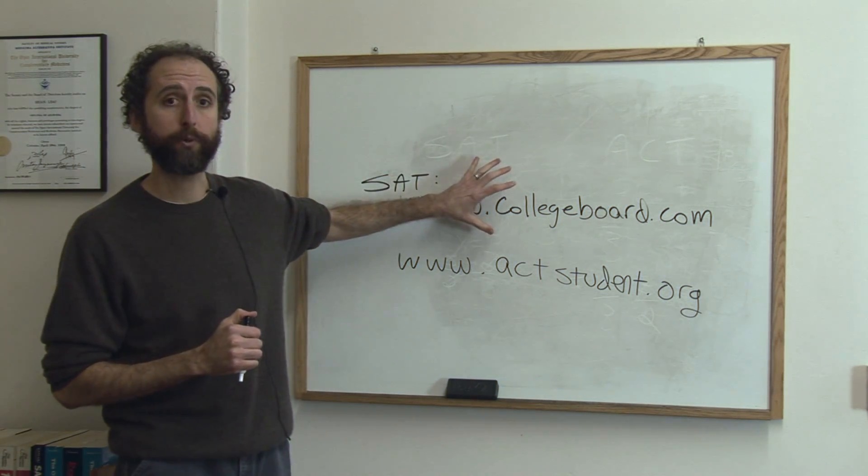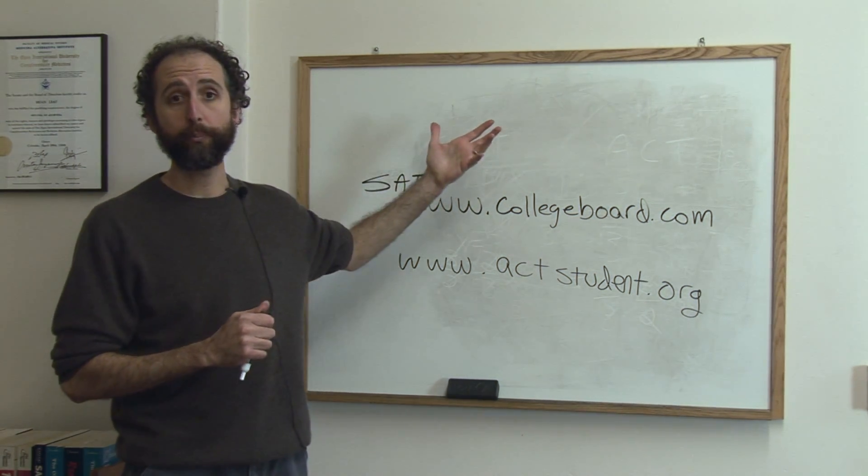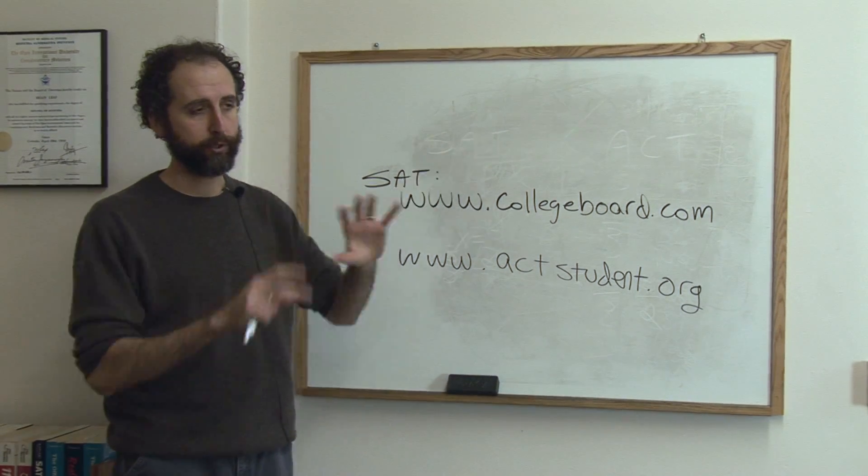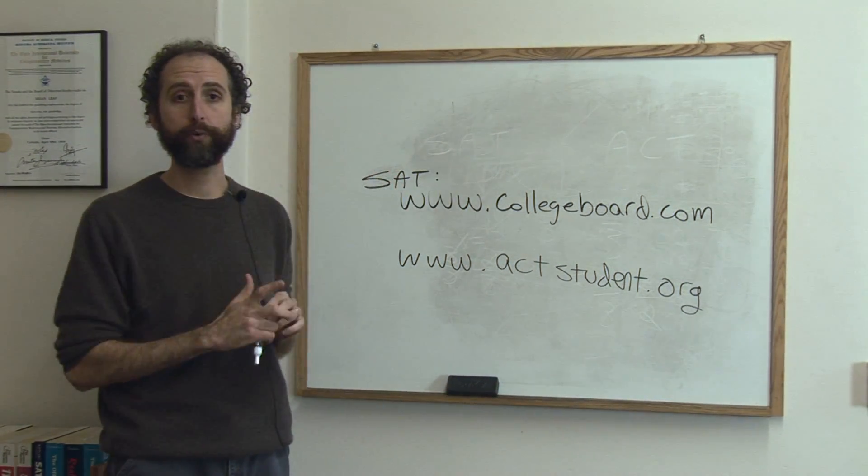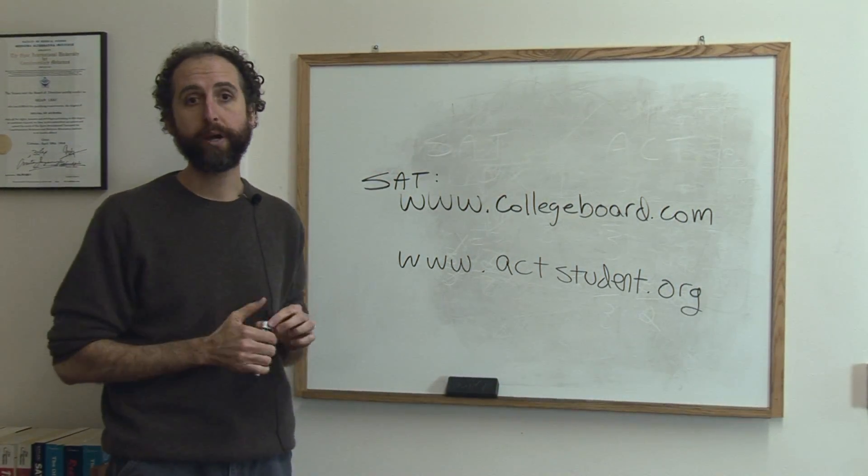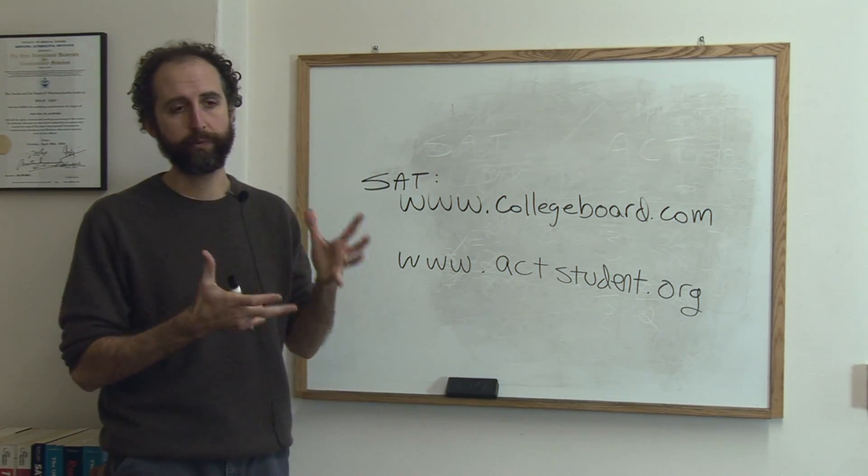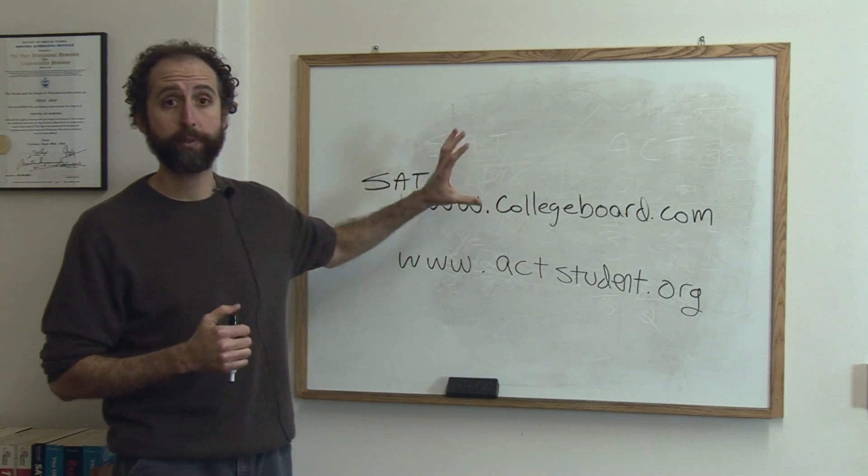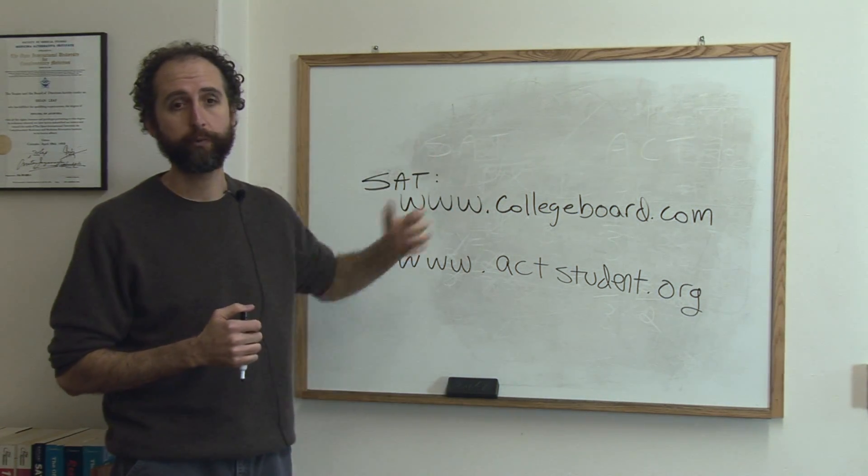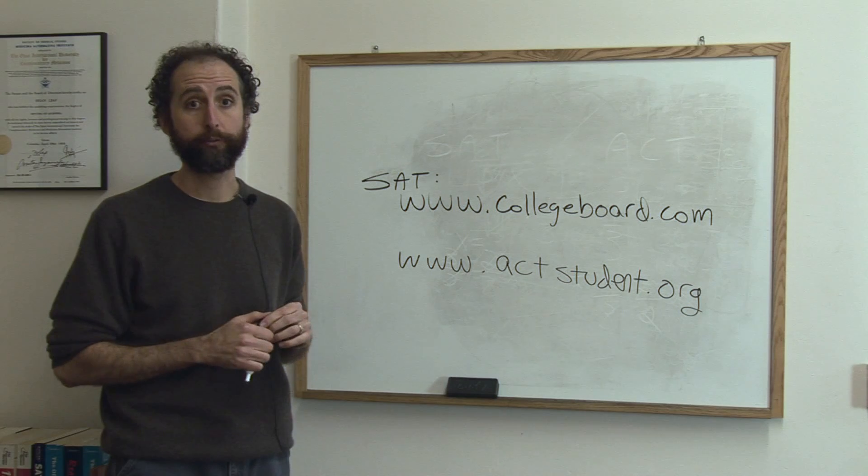The third thing you can get on collegeboard.com is you can actually take a full practice test. You can either just look at it as a PDF on your screen and do it on paper, or you can print it out if you have the availability to do that. It's a long test, so it's a lot to print out. But you can print it out and take a timed practice test and it gives you the answers and a scale. So that's great.